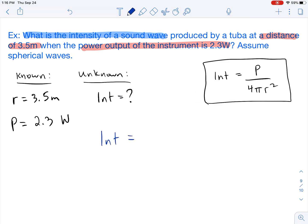Our intensity is going to equal our power 2.3 divided by 4 pi times the radius 3.5 squared. Make sure that you're only squaring the radius. The 4 pi does not get squared.